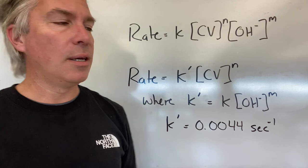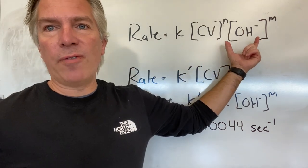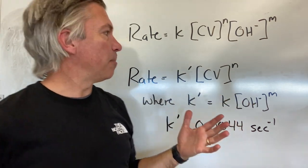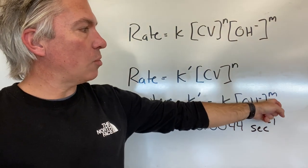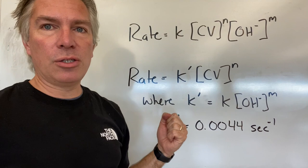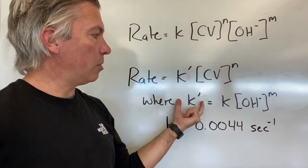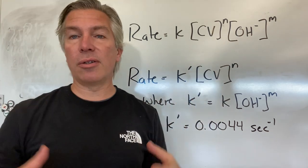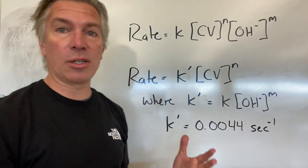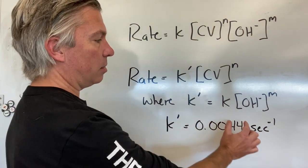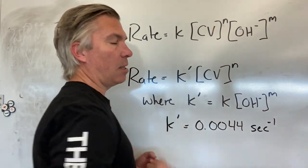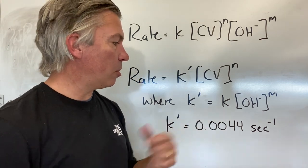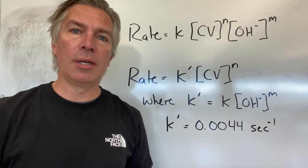Now, what the heck is a pseudo-rate constant? Well, I kept the concentration of OH very, very high so that as the crystal violet reacted, the OH essentially stayed constant. And so the concentration of OH, including its order, gets basically wrapped into the rate constant itself to form a new rate constant, a pseudo-rate constant. It's the rate constant with respect to crystal violet, not necessarily the rate constant with respect to the entire reaction, including the OH. The new pseudo-rate constant is equal to the actual rate constant times the concentration and order of the OH, which I guess at this point we don't know it. And that leads me to my pseudo-rate constant being 0.0044 one over seconds.